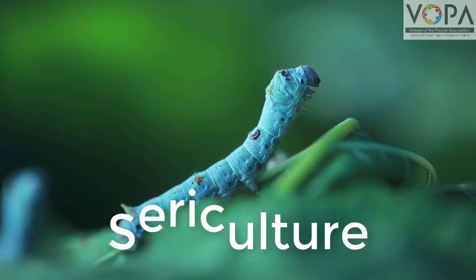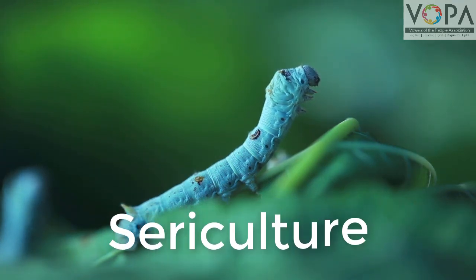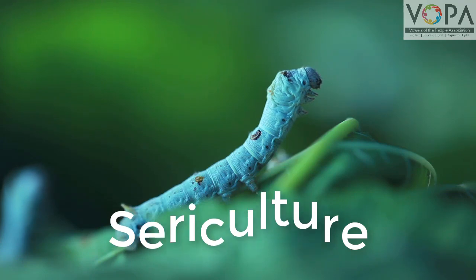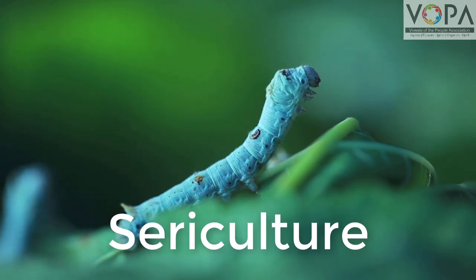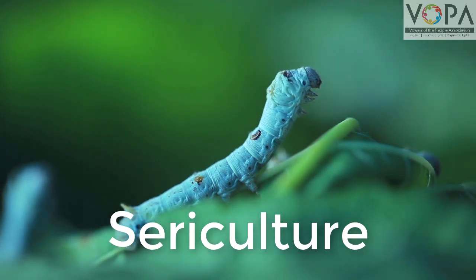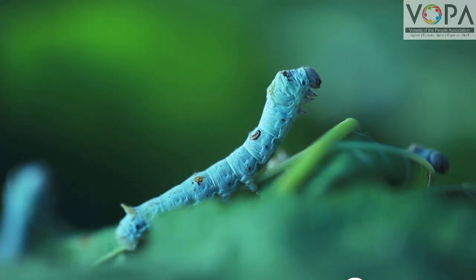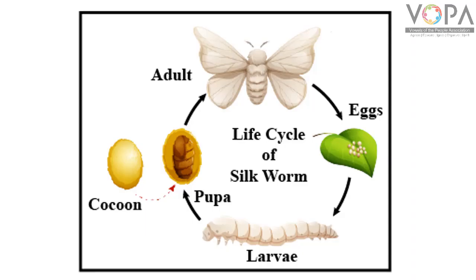Silk fiber is obtained from Bombyx Mori, or the Silk Moth. There are 4 stages in the life cycle of the silk moth: eggs, larva, pupa, and adult.